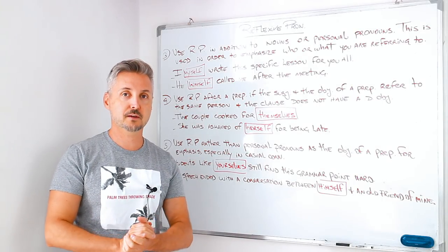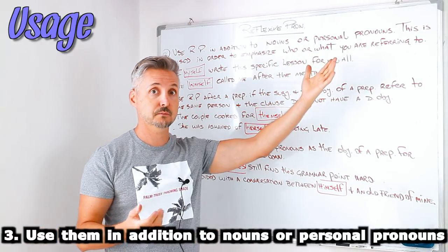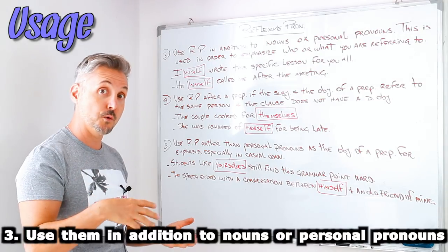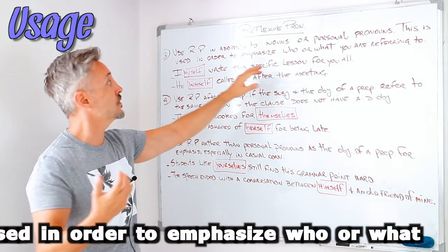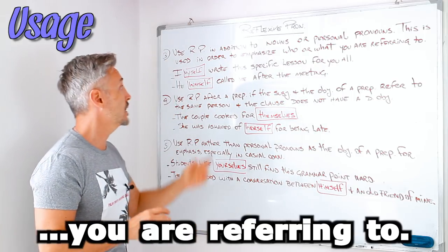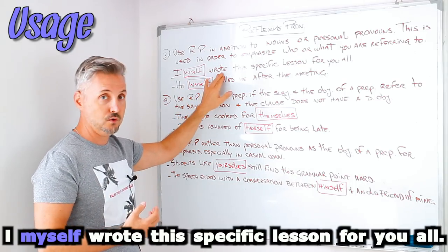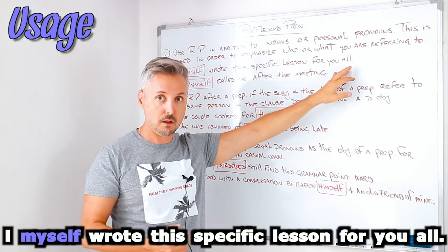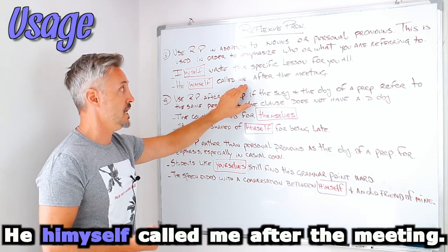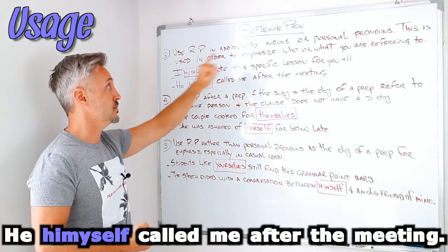Now, I'm going to erase this and I'm going to look at three other cases where we use reflexive pronouns. Yes, we're back with the reflexive pronouns. The third point. Use reflexive pronouns in addition to nouns or personal pronouns. Personal pronouns are I, you, he, she, it, we, you, they. This is used in order to emphasize who or what you are referring to. Let's look at my example. I, myself, wrote this specific lesson for you all. Another example, he himself called me after the meeting. You can see that himself and myself emphasize the personal pronoun.